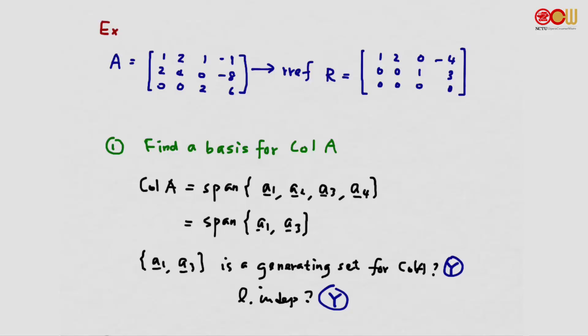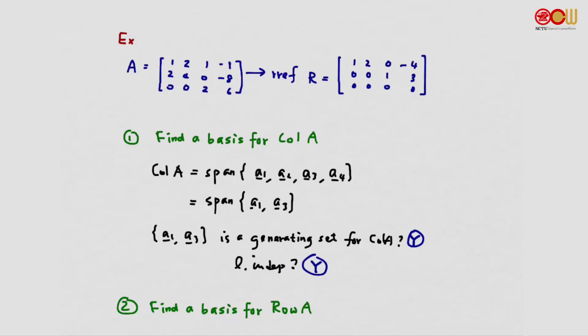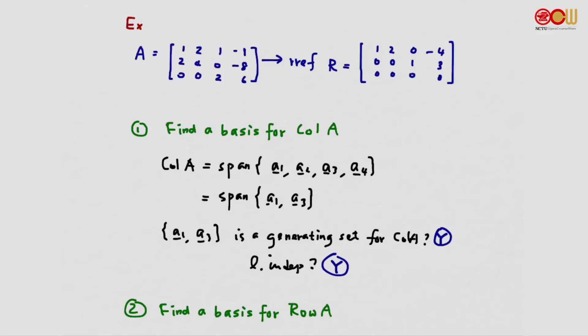We have also defined the row space of A, and we know it is a subspace. Let's try to find a basis for the row space of A. The row space of A by definition is the span of the row vectors.